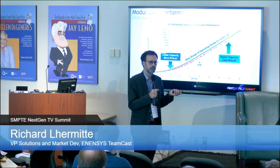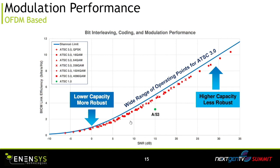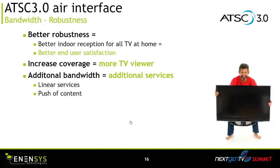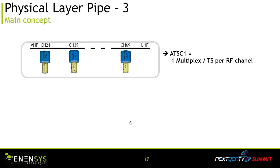There is a mechanism inside ATSC 3 called PLP — Physical Layer Pipe — which allows you to address different kinds of receivers. In ATSC 1, one multiplex in a 6 MHz channel has the same robustness for all bits. In ATSC 3, you can split your 6 MHz channel into different pipes, each with its own modulation, robustness, and coverage, allowing you to target different receivers within the same 6 MHz channel.